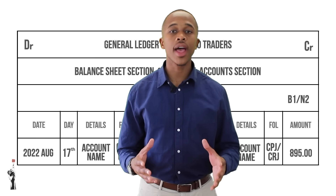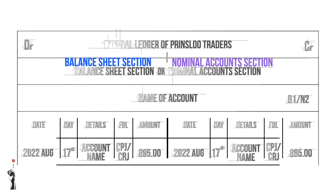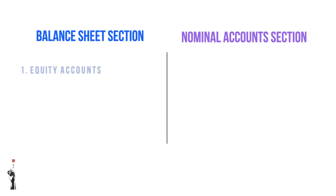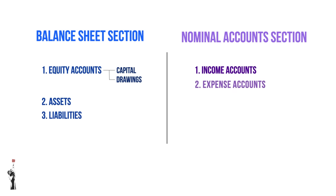The general ledger has two sections: the balance sheet section and the nominal account section. In the balance sheet section the following accounts are recorded: equity accounts, which include capital and drawings; all the assets; and all the liabilities. In the nominal account section, income accounts and expense accounts are recorded.